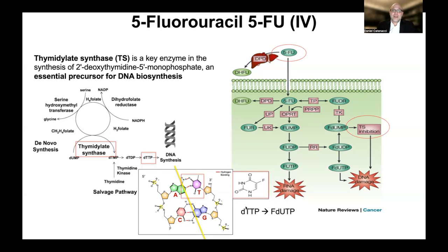The difference between dTTP and the product that 5-FU makes is basically a decoy. This decoy molecule gets incorporated into the DNA instead of dTTP, and therefore it alters the DNA structure and affects the cell negatively. Ultimately, if causing enough damage, it will lead the cell to die - called apoptosis.